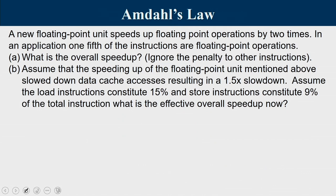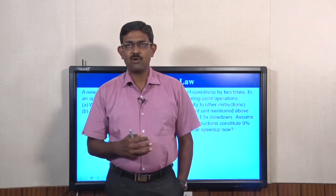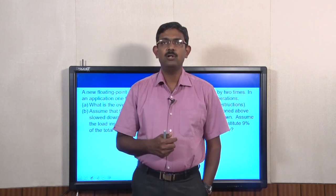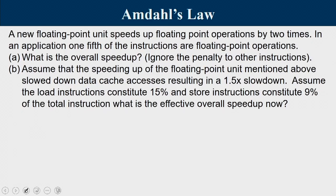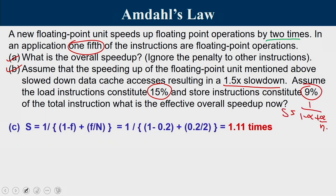Let us move to another problem dealing with performance using Amdahl's law. Amdahl's law gives an idea about how much performance gain can be achieved when a certain component is enhanced. A new floating point unit speeds up floating point operations by 2 times. In an application, one fifth of the instructions are floating point instructions. Part 1: what is the overall speedup? Part 2: assume the speedup of the floating point unit slows down data cache access by 1.5 times, and load plus store instructions constitute 15 plus 9 equals 24 percent. What is the effective overall speedup?